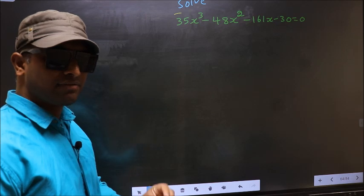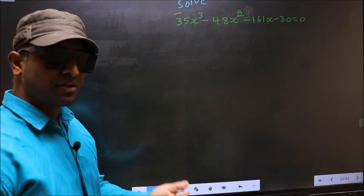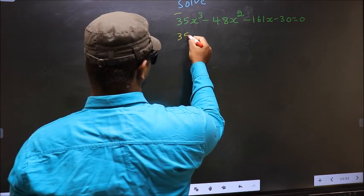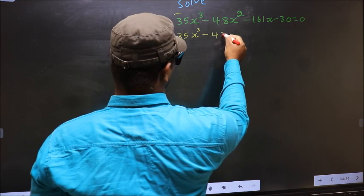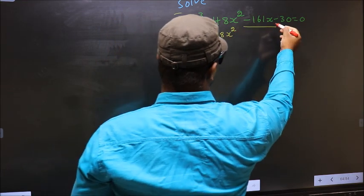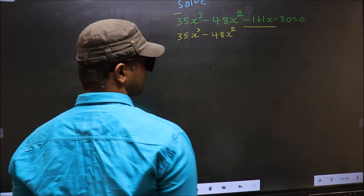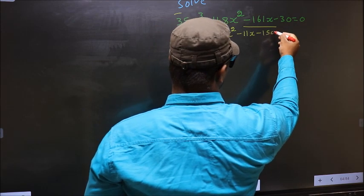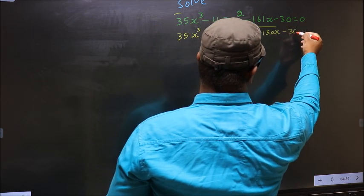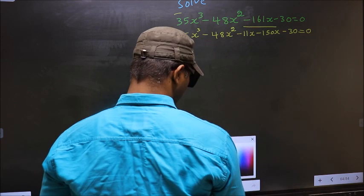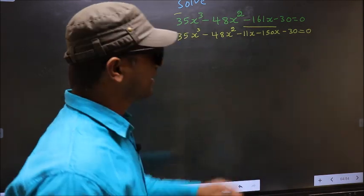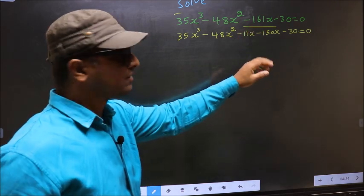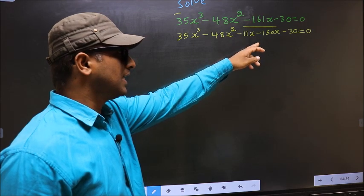For that we have to change the x term. In place of minus 161x, I write minus 11x minus 150x, keeping the rest as 35x³ minus 48x² minus 11x minus 150x minus 30 equal to 0.